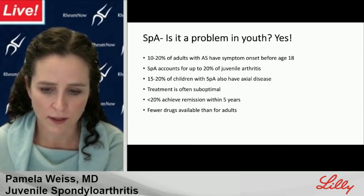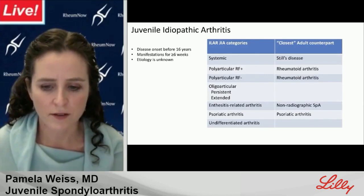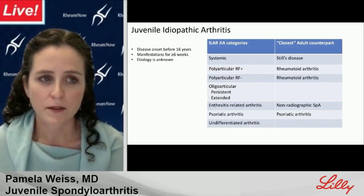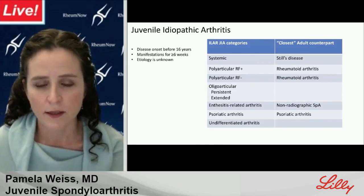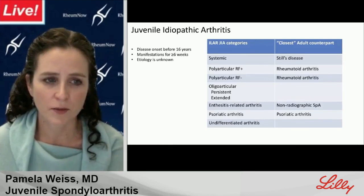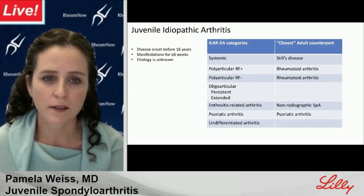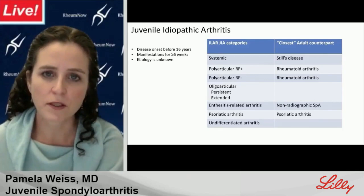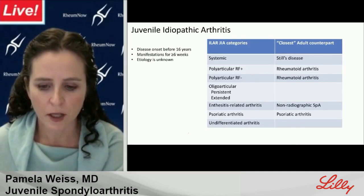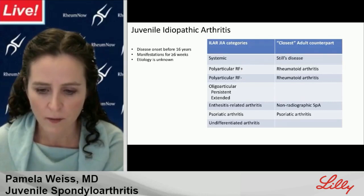The classification of juvenile arthritis is often a headache for adult rheumatologists to understand. To be considered for juvenile idiopathic arthritis, disease onset must occur before age 16, manifestations must have been present for at least six weeks, and the etiology is supposed to be unknown. The current classification criteria used clinically are the ILAR criteria, which define seven mutually exclusive categories. Some categories are easily comparable to adult conditions, like psoriatic arthritis, while others, like oligoarticular juvenile arthritis, don't have a clear adult counterpart.